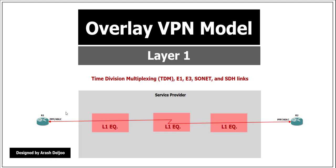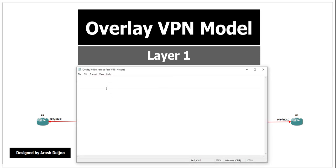In this video I am going to talk about different types of VPNs, for example overlay VPN and also peer-to-peer VPN. Let me start with the definition of VPN. VPN is the abbreviation of Virtual Private Network. A VPN is a network that emulates a private network over a common infrastructure.